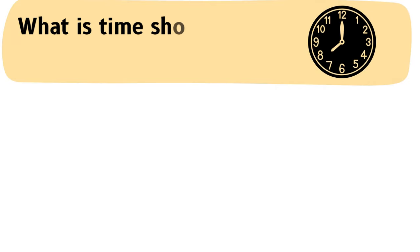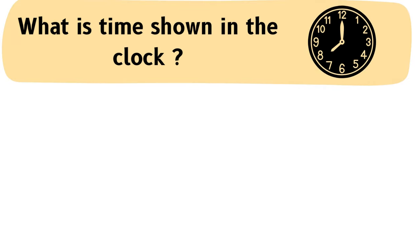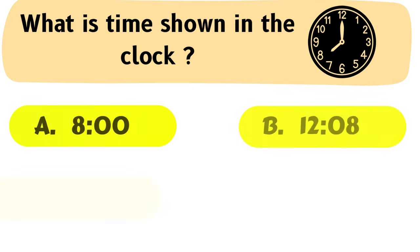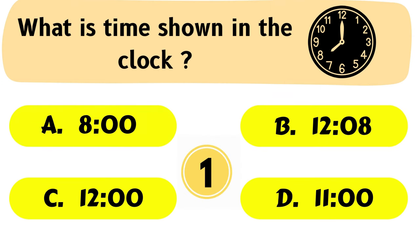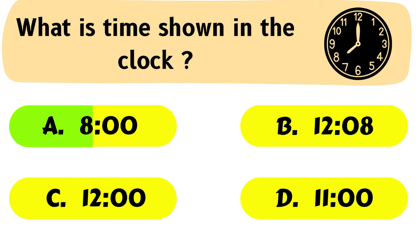Question No. 3: What is the time shown in the clock? A. 8 o'clock, B. 12:8, C. 12 o'clock, D. 11 o'clock. The correct answer is Option A: 8 o'clock.